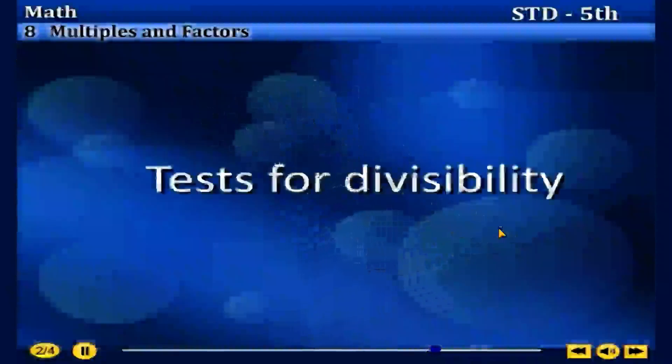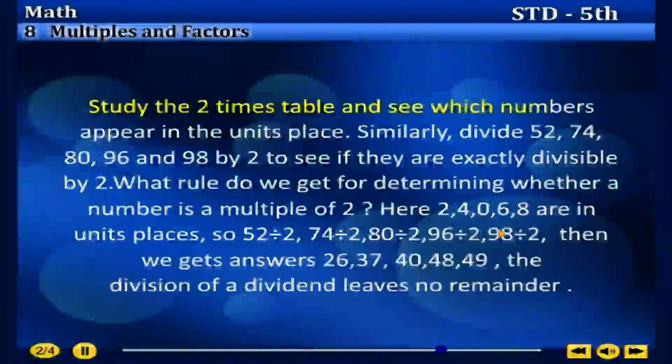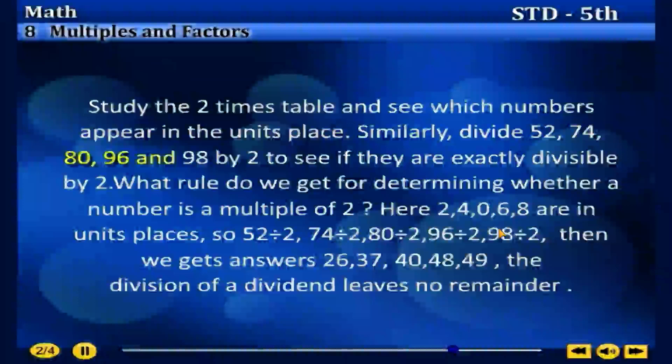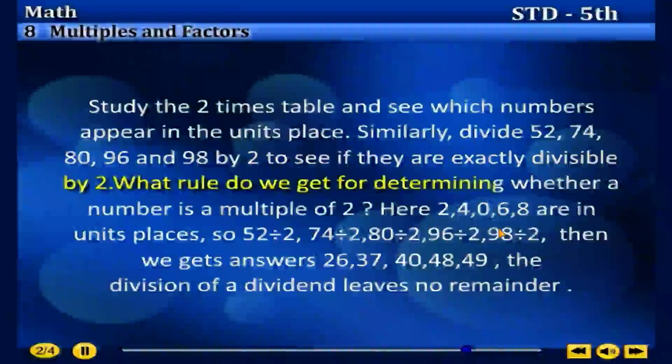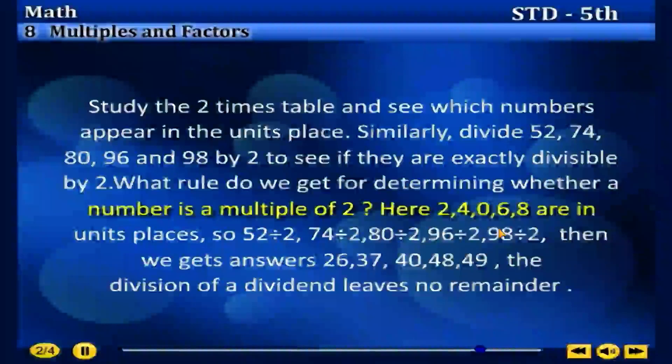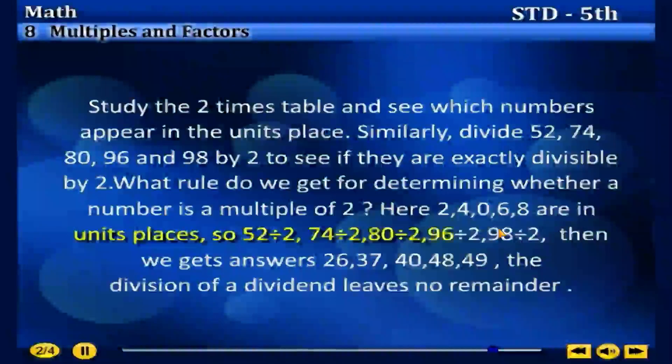Test for Divisibility: Study the 2 times table and see which numbers appear in the unit's place. Similarly, divide 52, 74, 80, 96, and 98 by 2 to see if they are exactly divisible by 2. What rule do we get for determining whether a number is a multiple of 2? Here, 2, 4, 0, 6, 8 are in the unit's places. So, 52 divided by 2, 74 divided by 2, 80 divided by 2, 96 divided by 2, 98 divided by 2.